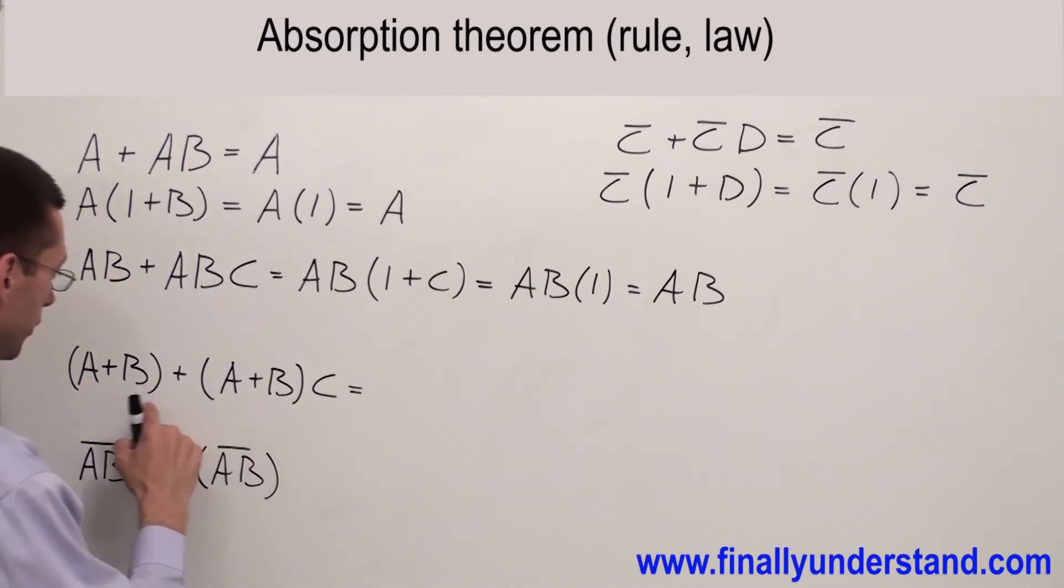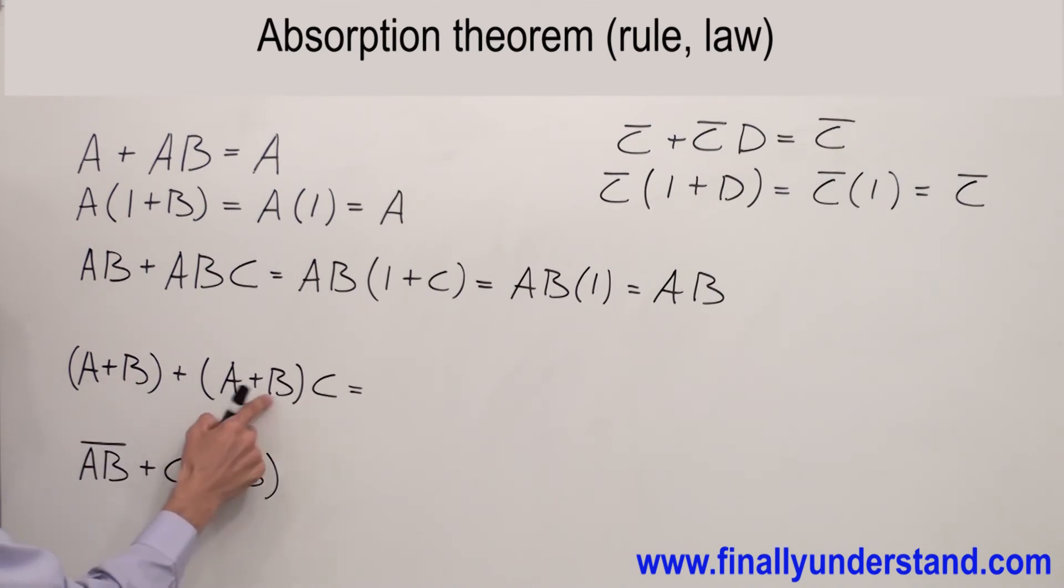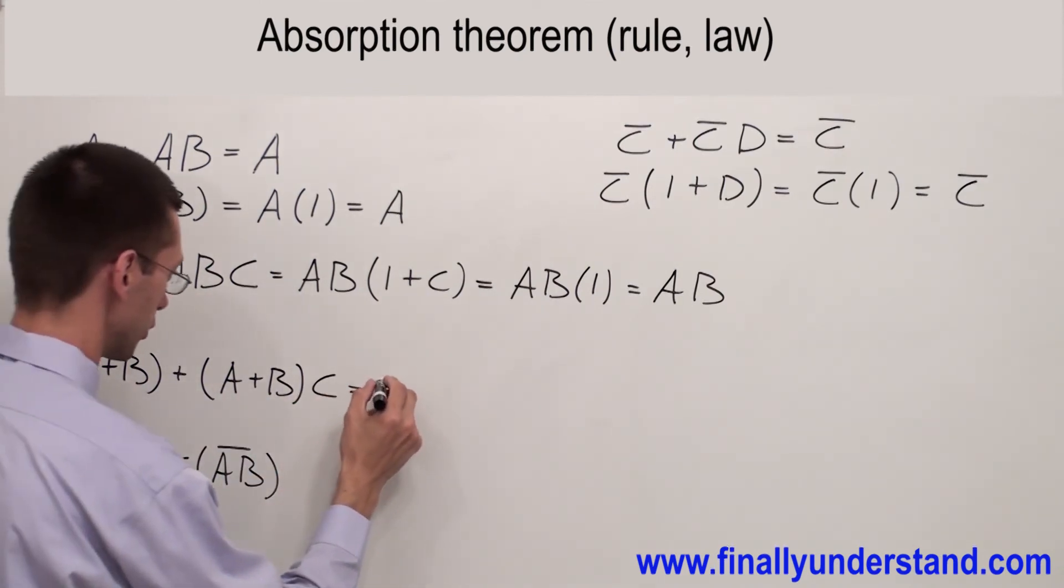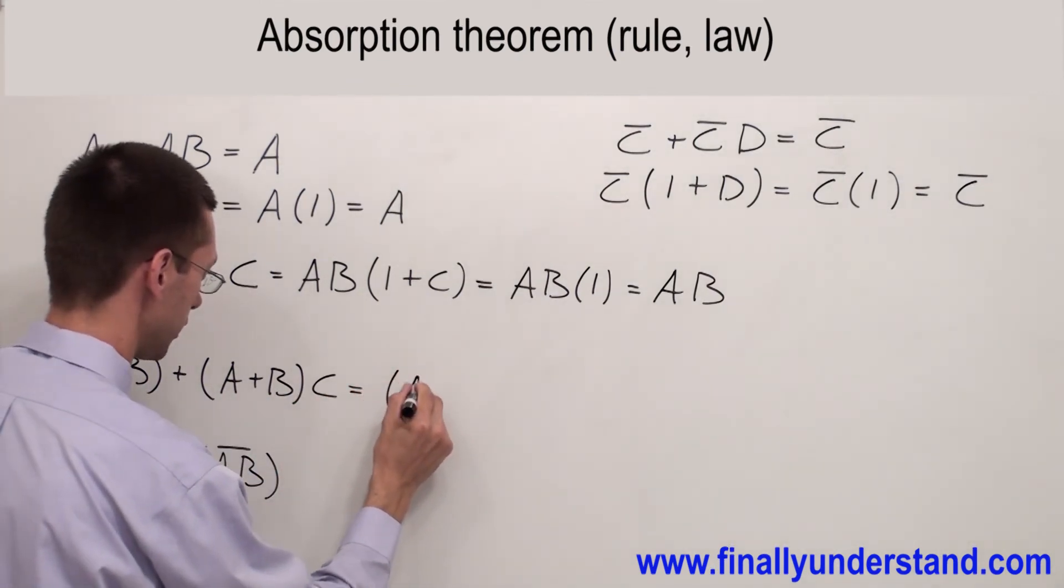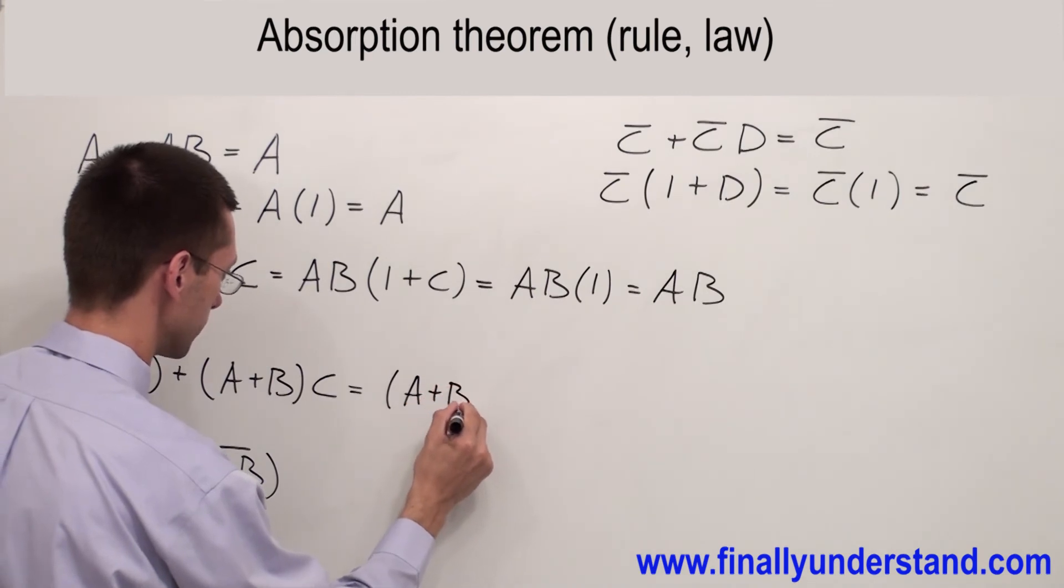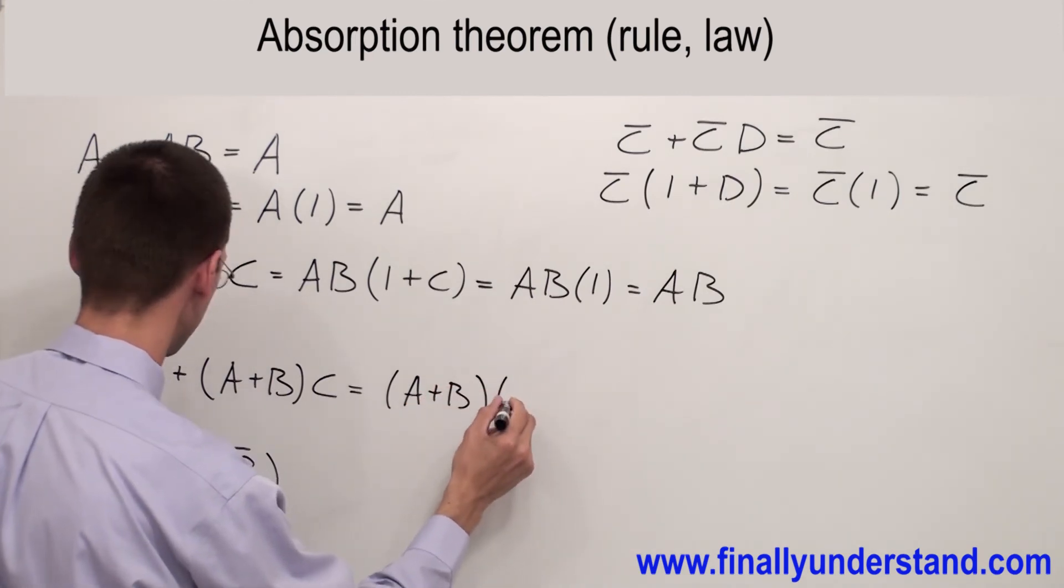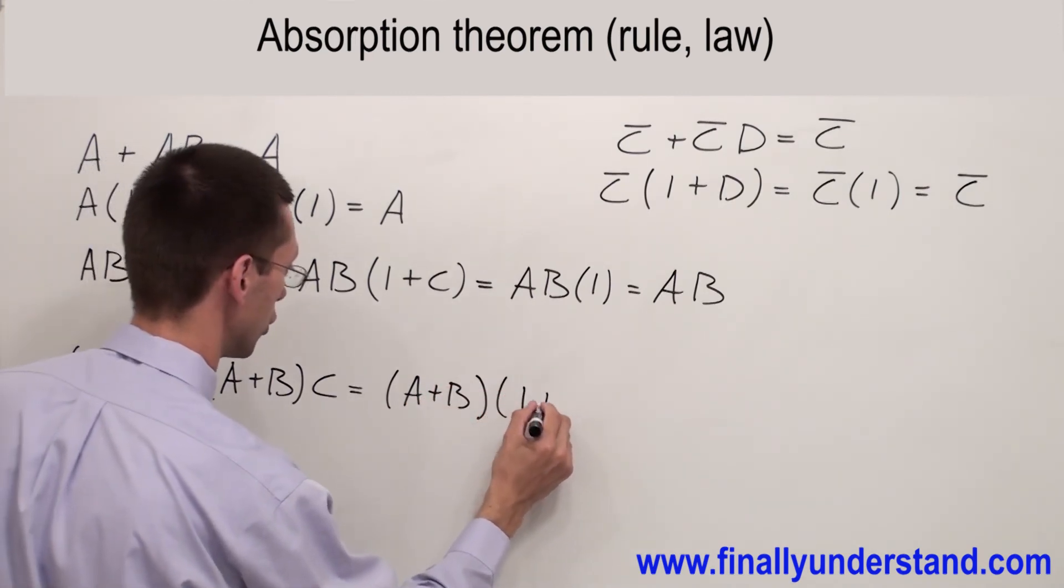Why? Because I can factorize (A OR B) from these two terms. So I'm going to have A OR B. And inside of the parenthesis I'm going to have 1 OR C.